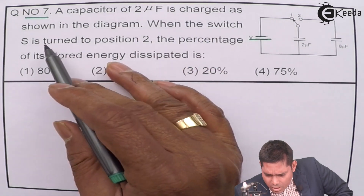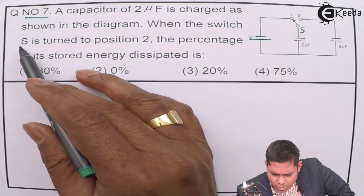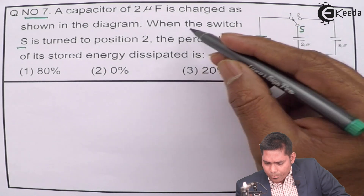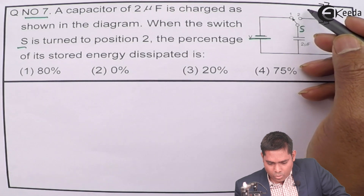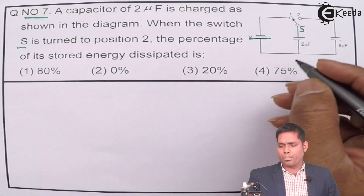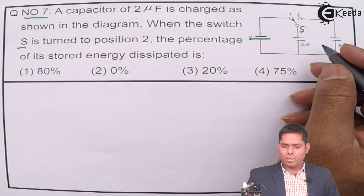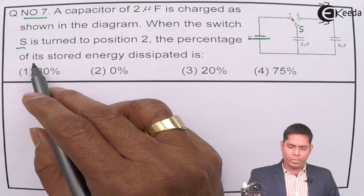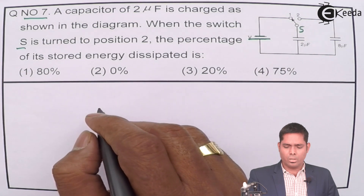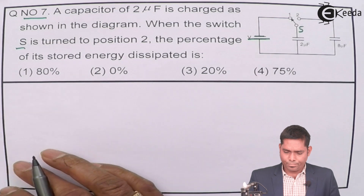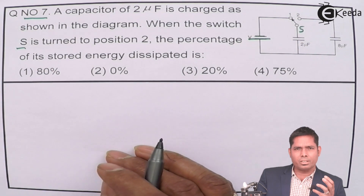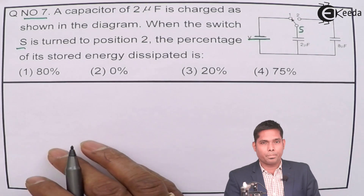When the switch S is turned to position 2, after a very long time, the two capacitors get connected and there will be a change in charges and potential drop across the capacitors. What we need to find is the percentage of its stored energy that is dissipated — that is, the loss of energy. It is asking about what energy you had initially stored and what you finally have, so you have to find the percentage change.